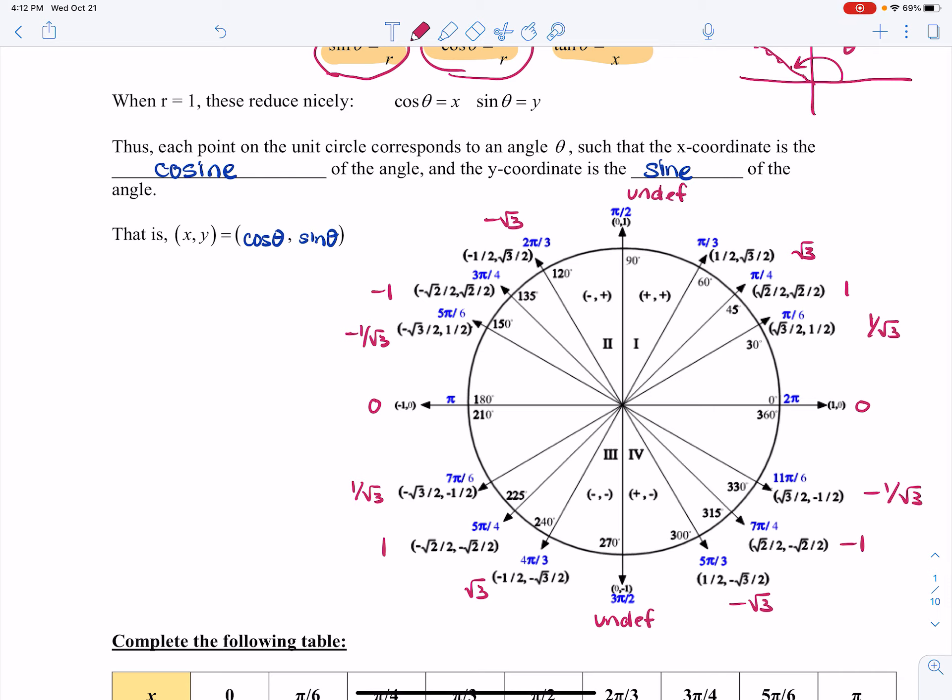So in blue, I have the angle in radians, and you notice here, here, here, and here that the angle is listed in degrees, and that is to show the correspondence between the angle in degrees and the angle in radians. So just as an example, we already know that sine of 60 degrees is root 3 over 2.